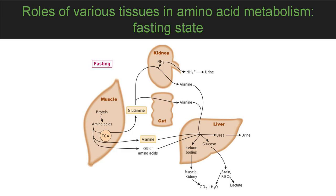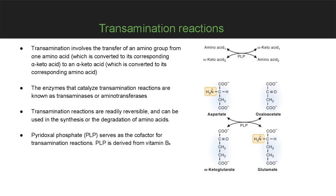Transamination is the major process for removing nitrogen from amino acids. In most instances, the nitrogen is transferred as an amino group from the original amino acid to alpha-ketoglutarate, forming glutamate, whereas the original amino acid is converted to its corresponding alpha-keto acid. For example, aspartate can be transaminated to form its corresponding alpha-keto acid, oxaloacetate.